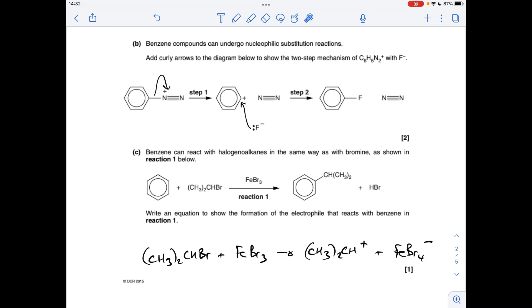There's the equation for the generation of the electrophile. Obviously that's the thing that's going to react with benzene to give that. So you can see the FeBr3 there is carrying the bromine, so that's why they're called halogen carrier catalysts.